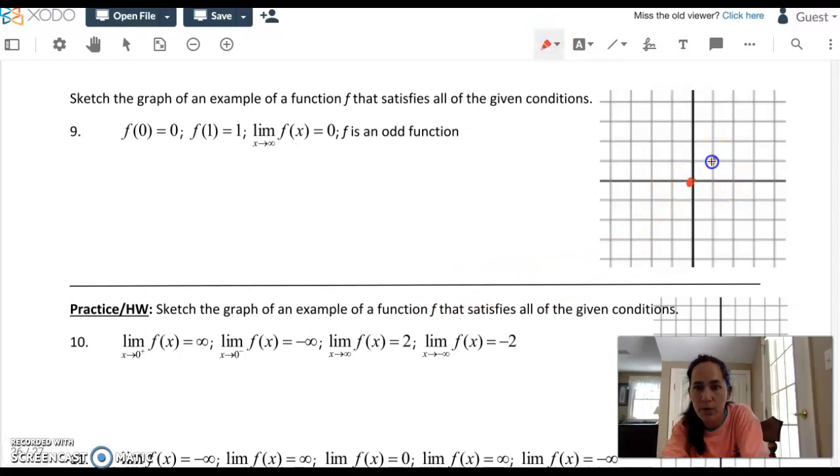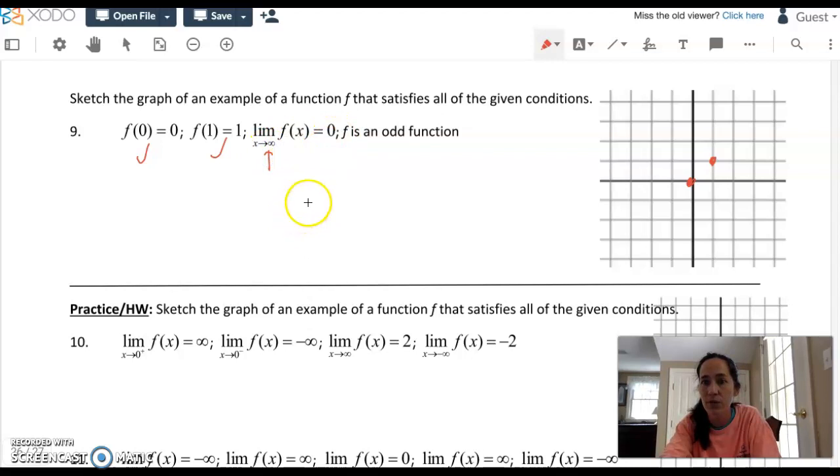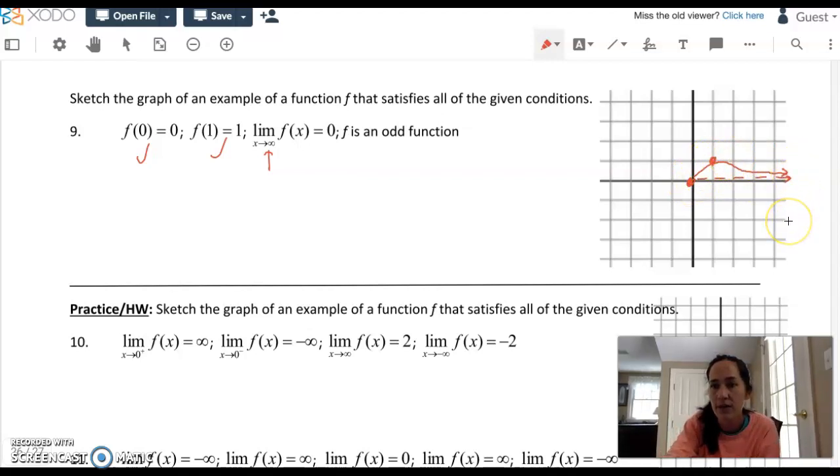And then it says the limit as x approaches infinity of f of x has to be 0. We can make that happen either from above or from below. I'm going to even draw in a partial HA there. We have to approach the line y equals 0. An easy thing to do might be to connect up and curve back down and have it approach the asymptote off to the outside like that. You can actually dip under the asymptote and come back up as long as you're approaching 0 to the far right end of the graph.